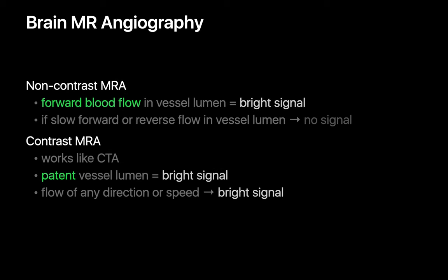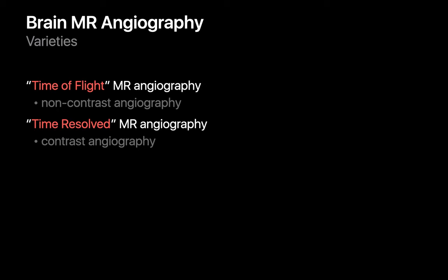A particular feature of most non-contrast MR angiography sequences is that only forward blood flow in a vessel lumen appears bright. Blood flow that's reversed or moving forward very slowly will show little, if any, signal. Contrast-enhanced MR angiography sequences, on the other hand, behave like a conventional angiogram, in that any patent vessel lumen, regardless of the direction or speed of flow, will appear bright. You'll often hear non-contrast MR angiography referred to as time-of-flight MRA, while contrast MR angiography may be referred to as time-resolved MRA.